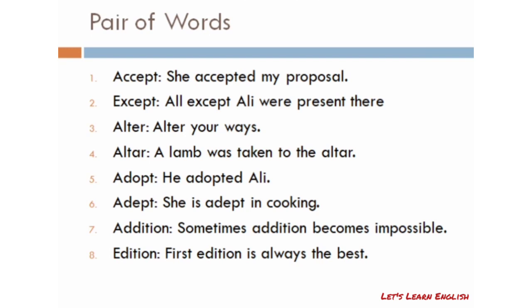Number five: 'adopt' means apnana — 'He adopted Ali' (usne Ali ko apnaya). Number six: 'adept' means mahir hona, skilled — 'She is adept in cooking' (foo pakane mein mahir hai). Number seven is 'addition.'